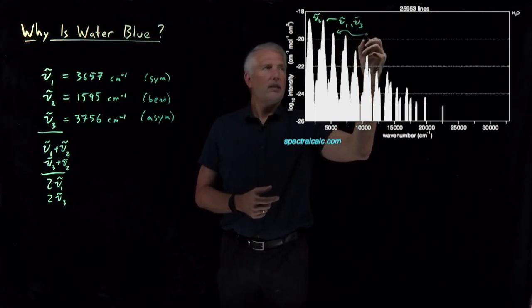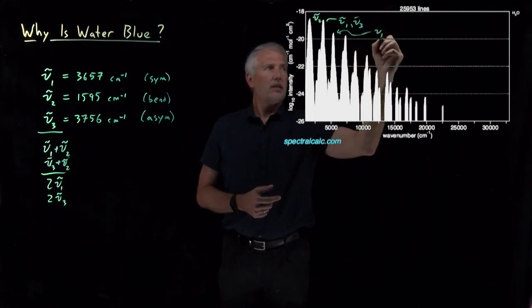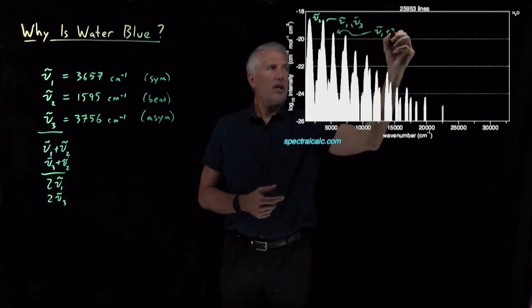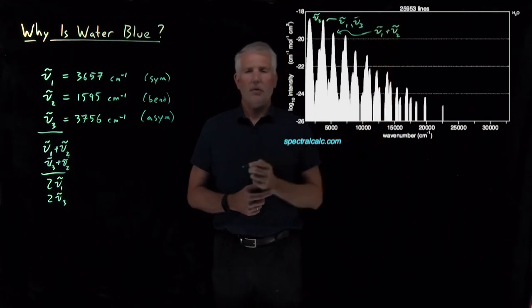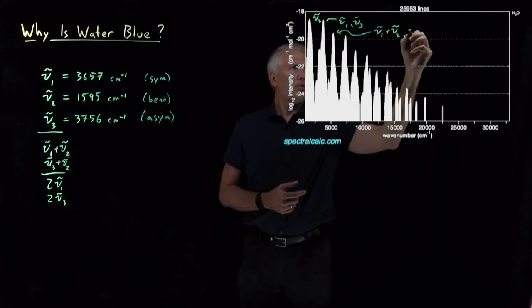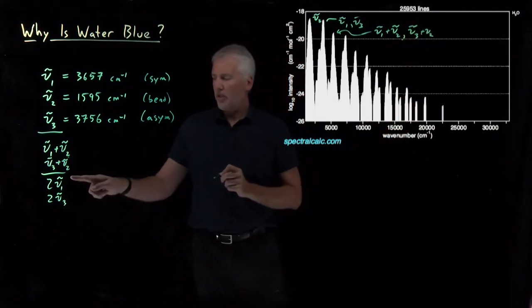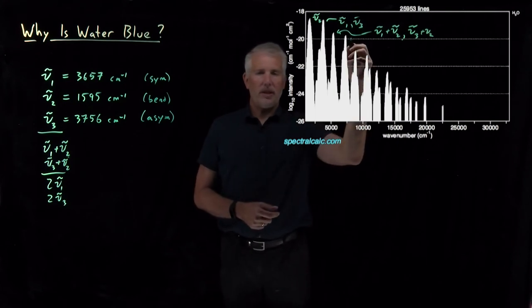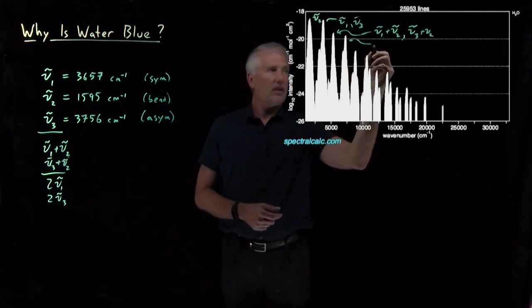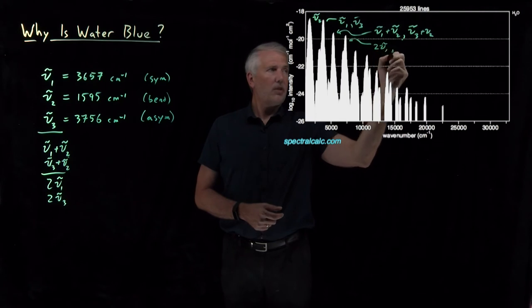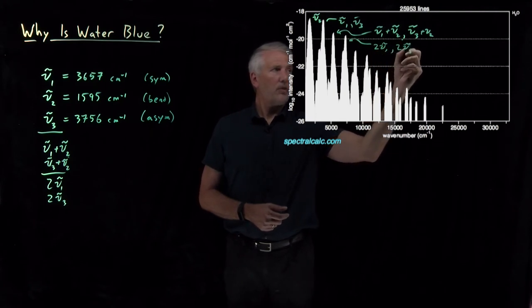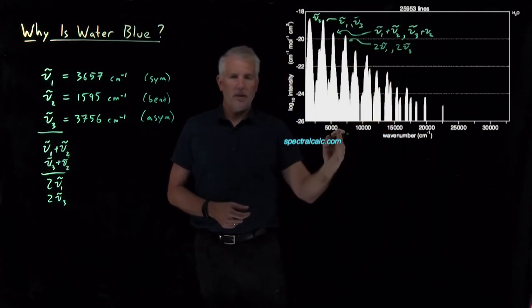Here's a non-ideal overtone, nu 1 plus nu 2 or nu 3 plus nu 2. The ones that are double the symmetric and antisymmetric stretch, that's this collection of peaks here. Twice nu 1 or twice nu 3. Those are at a little above 7,000 wave numbers.